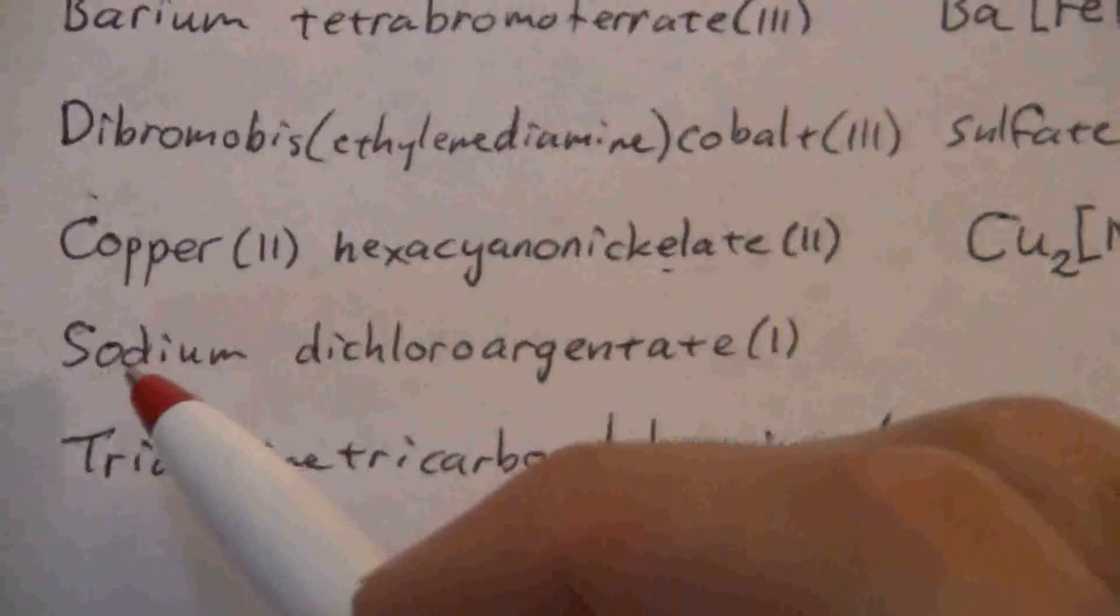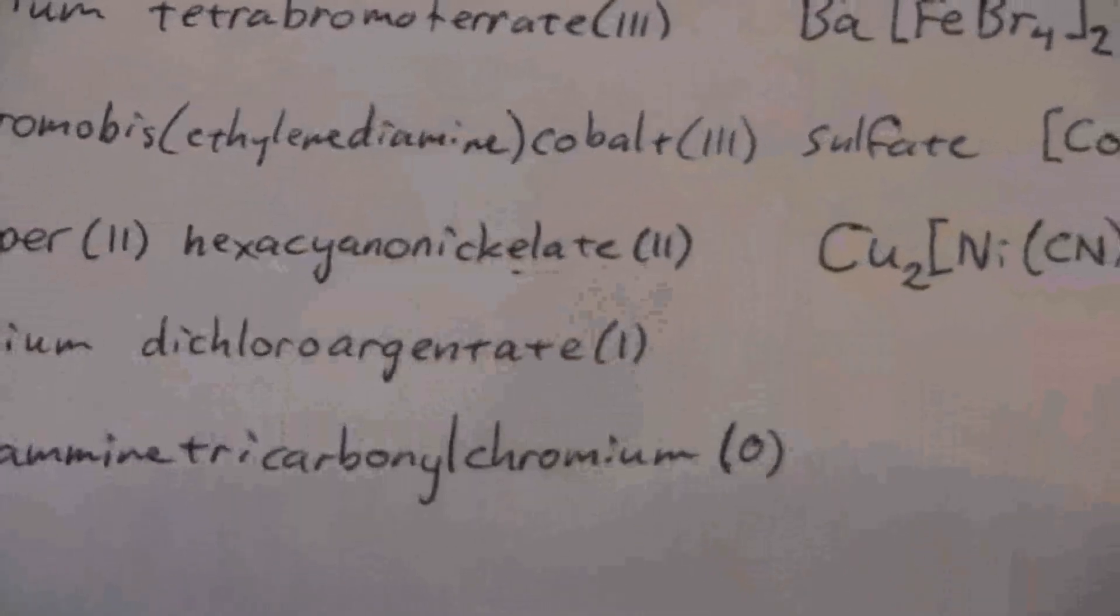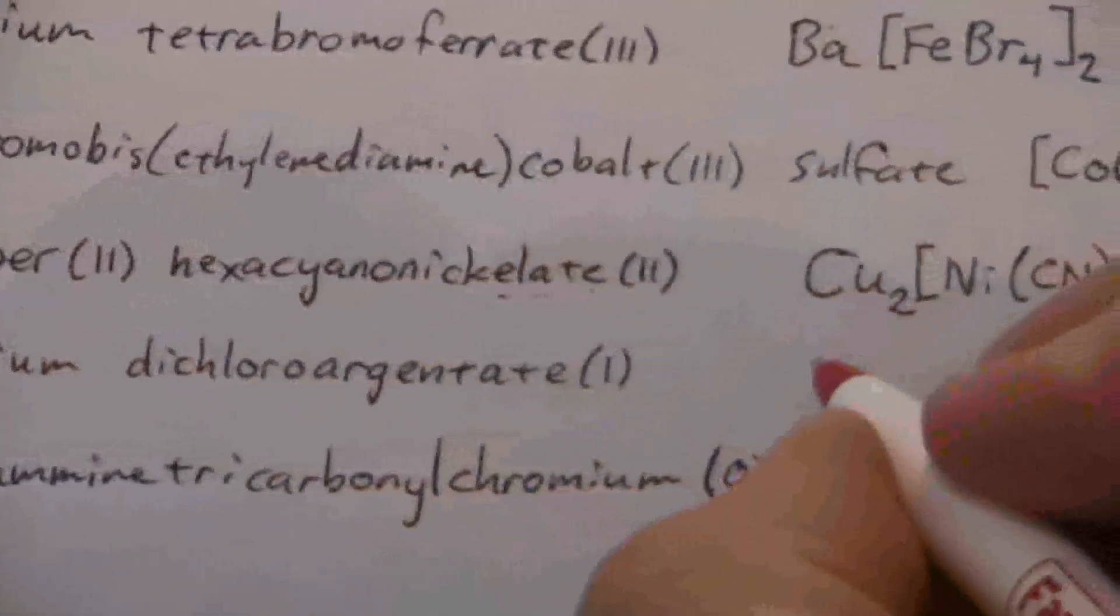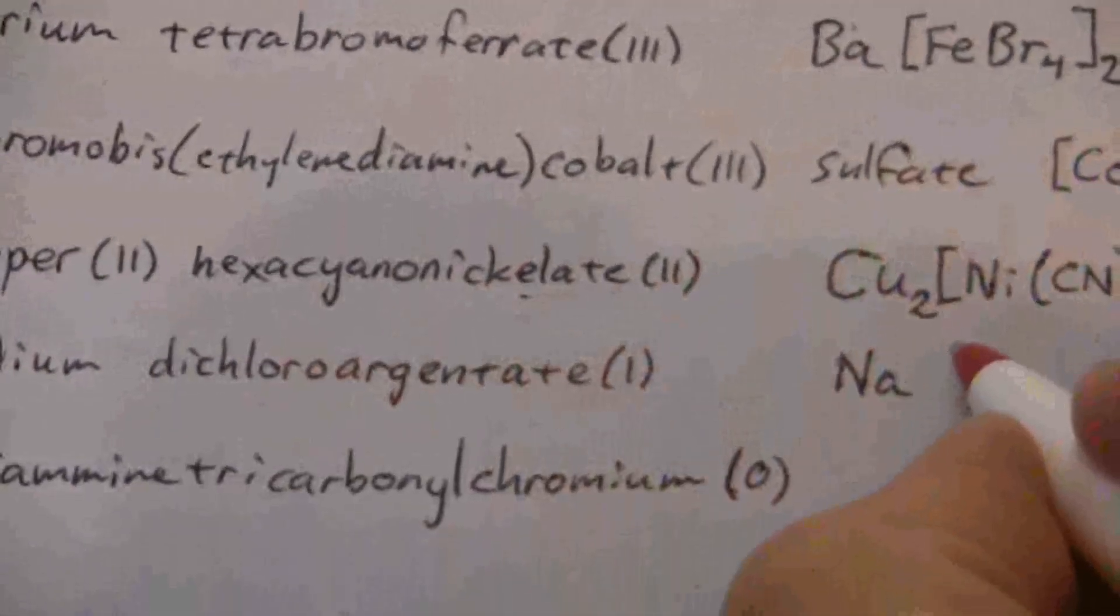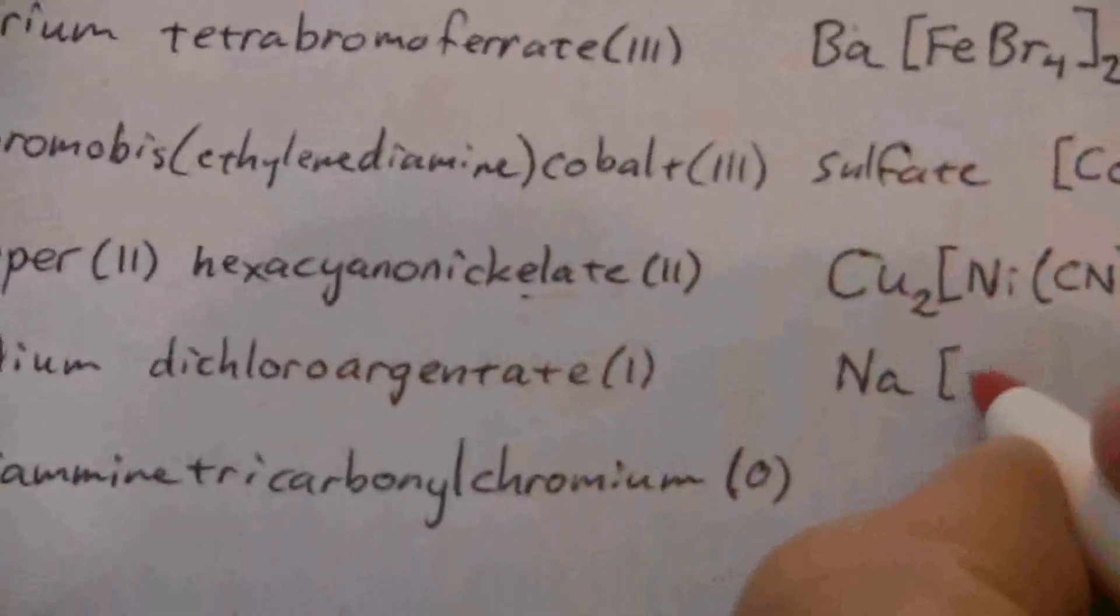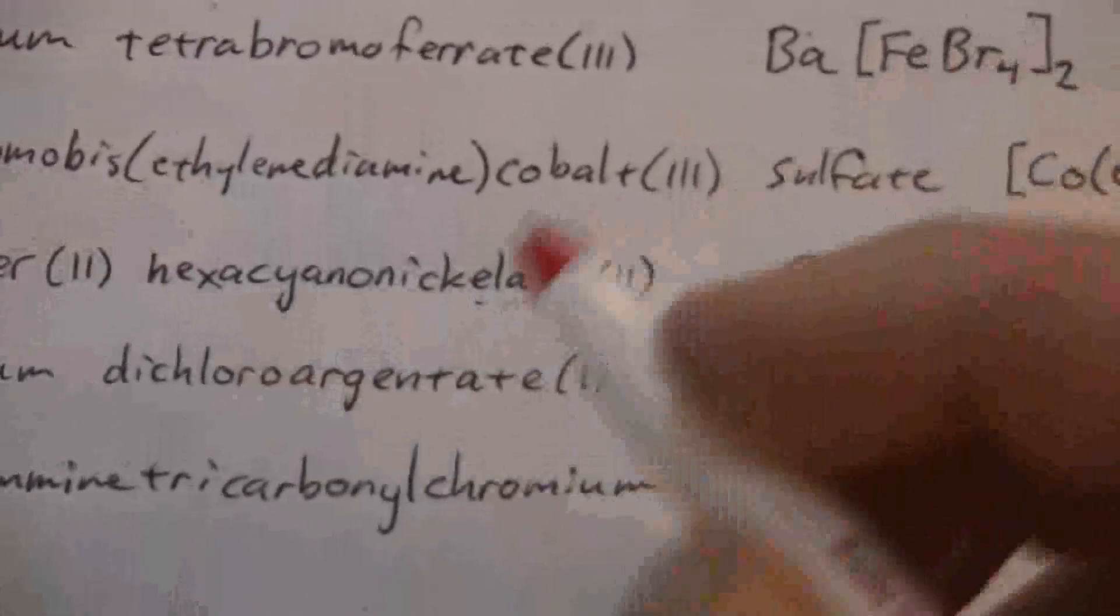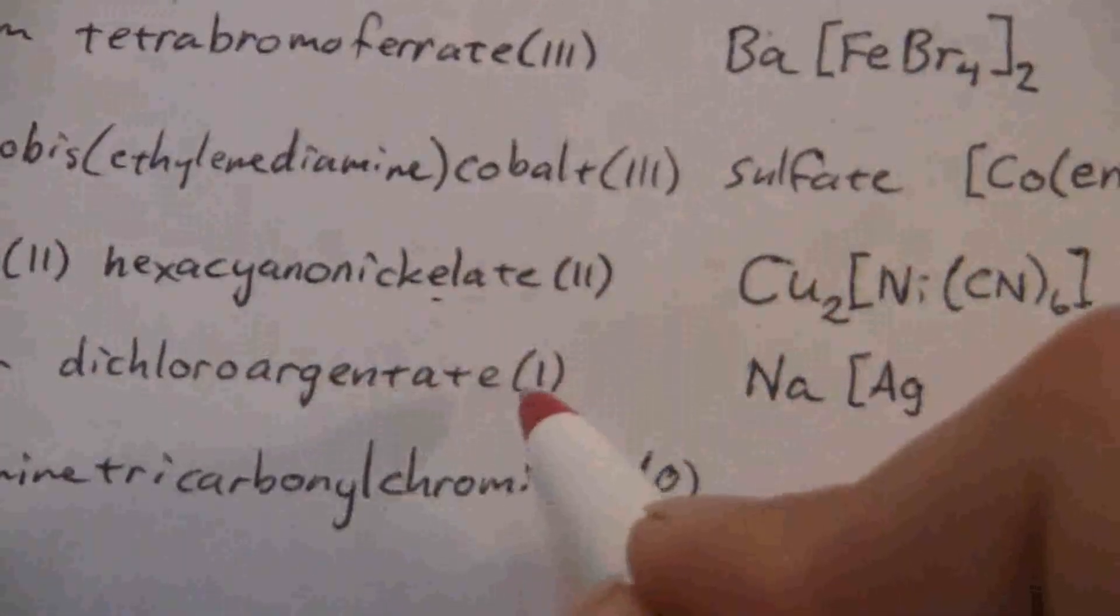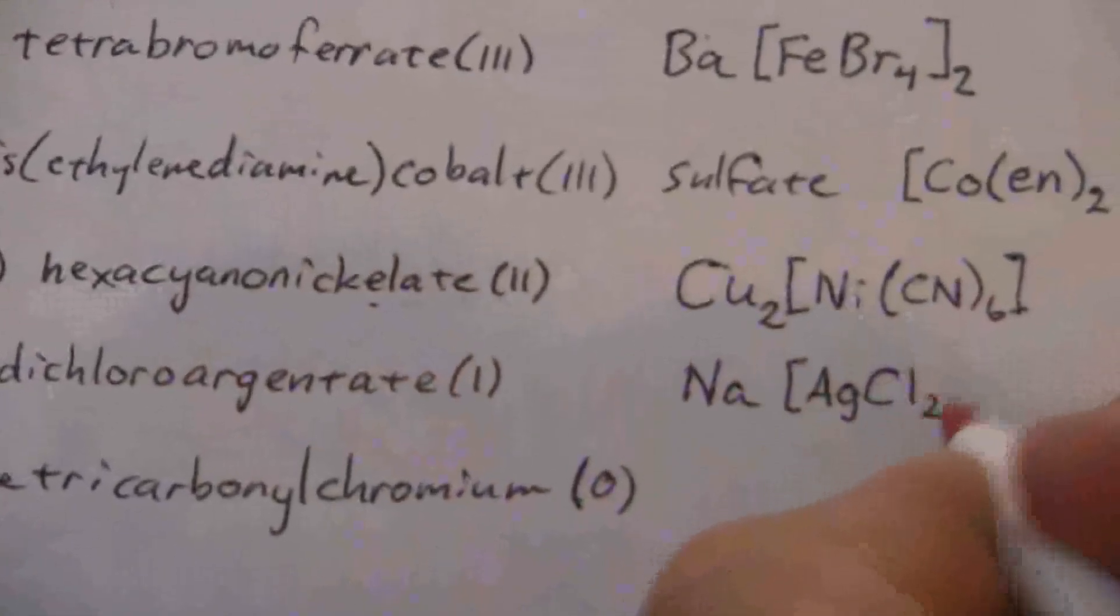Okay, now here we have sodium dichloro argentate(I). So sodium is Na, and then dichloro argentate. Argentum, or silver, is Ag, and then dichloro, so that will be AgCl2.